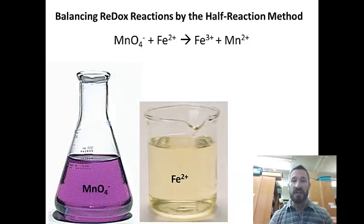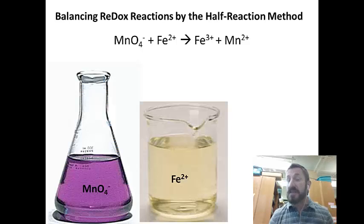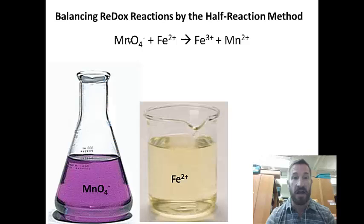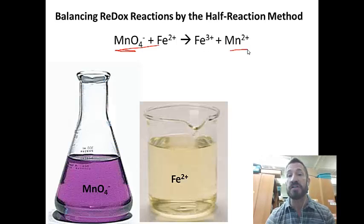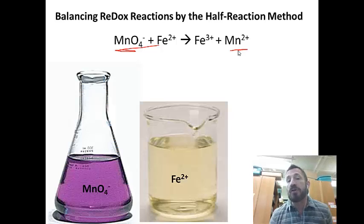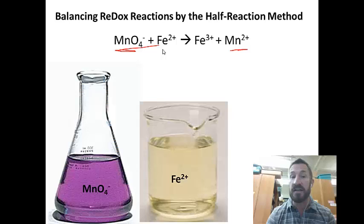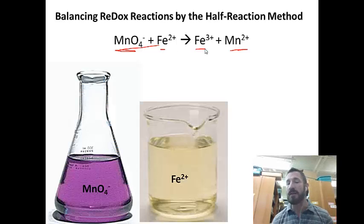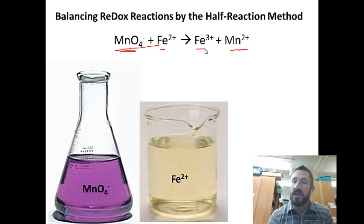Today we're going to learn how to balance redox reactions by the half-reaction method. This method is necessary when you have a reaction involving a polyatomic ion changing into a simple ion. If we were to just see a redox reaction of a metal ion that didn't involve a polyatomic ion, this would not be necessary. But any time you see a polyatomic ion, this is the method we'll use, and we'll assume the reaction occurs in acidic solution.